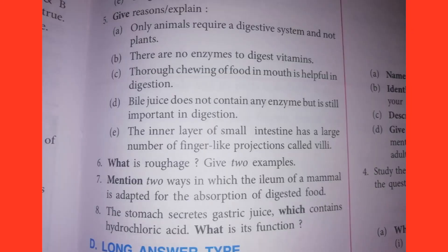Fifth one: Give reasons and explain. A: Only animals require a digestive system and not plants. B: There are no enzymes to digest vitamins. C: Thorough chewing of food in the mouth is helpful in digestion. D: Bile juice does not contain any enzyme but is still important in digestion. E: The inner layer of the small intestine has a large number of finger-like projections called villi. Answers showing on screen.